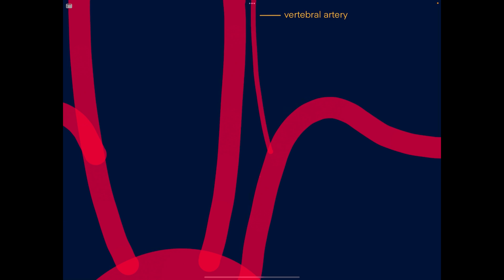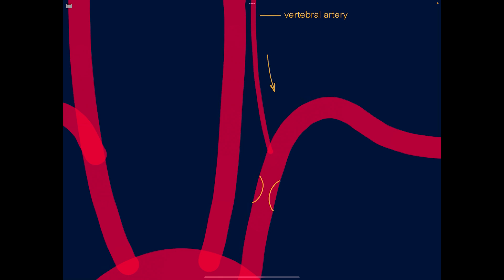The vertebral arteries ascend in the transverse foramen of the cervical spine and join together to form the basilar artery. There's an important clinical correlation called subclavian steal syndrome — this is when a significant stenosis of the proximal subclavian artery becomes so severe that blood flow actually reverses in the vertebral artery. The classic history is a patient passing out when exercising the affected arm, because the vertebral artery pulls blood out of the circle of Willis.